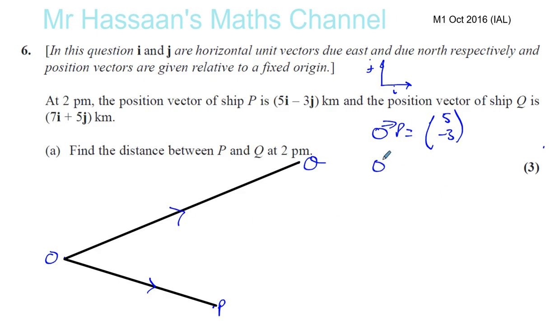Okay, so OQ the vector is, as a column vector which as I said is easy to deal with, 7 for i and 5 for j.